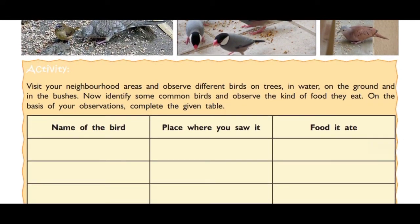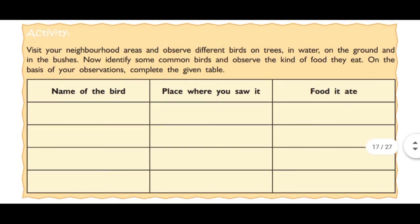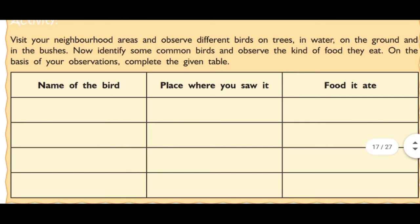Here is an activity: is activity mein aapko apne aas paas ke birds ke naam likhne hain aur batana hai ki un birds ko aapne kis jagah pe dekha hai — on the branch of a tree ya phir on the roof of any house. Yeh sari unki information likhni hai aur yah bhi batana hai ki kaun sa food wo kha raha hai.